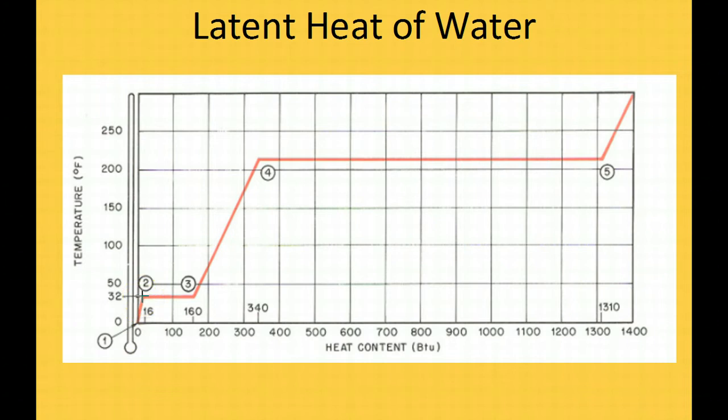Once that ice reaches 32 degrees and more heat is added, the temperature remains at 32 degrees from 0.2 to 0.3. This is where it's changing state from a block of ice into a puddle of water. If you look here, it absorbs about 144 BTUs of heat for that block of ice to change state from solid to liquid. You can see it takes quite a bit more energy from 0.2 to 0.3 than it does from 0.1 to 0.2.